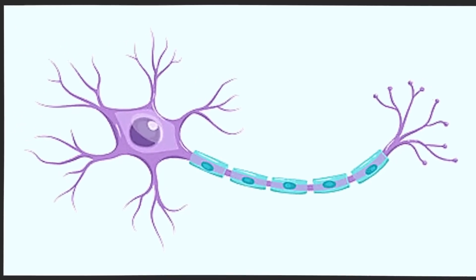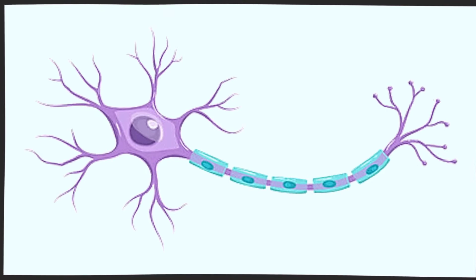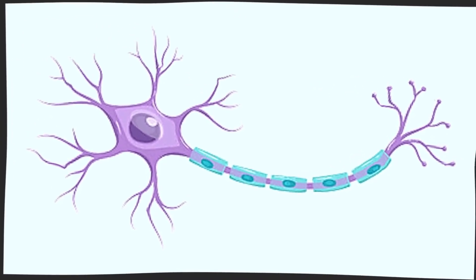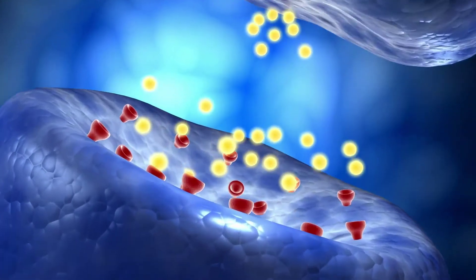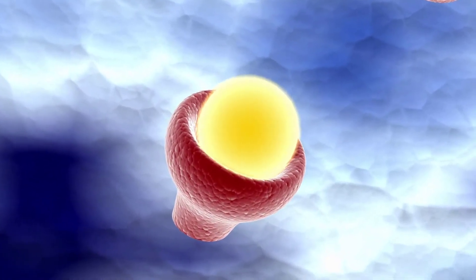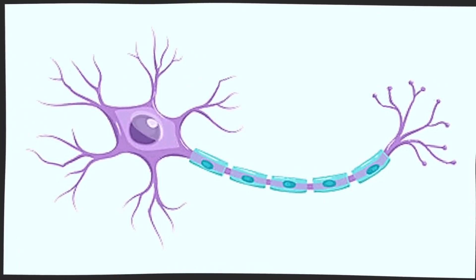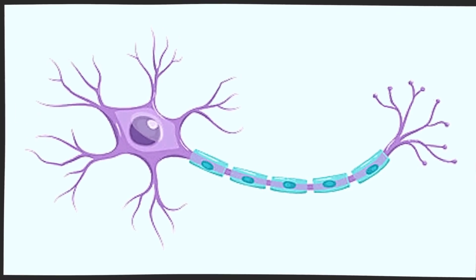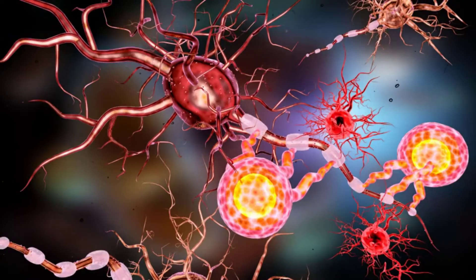The cell body includes most of the cytoplasm, the organelles, and the nucleus. The dendrites are branching structures that come off of the cell body appearing as thin extensions. Dendrites are specialized for receiving information in the form of neurotransmitters and other chemical messengers. The axon extends from the neuron body and can be wrapped in an insulating layer known as myelin, or the myelin sheath.